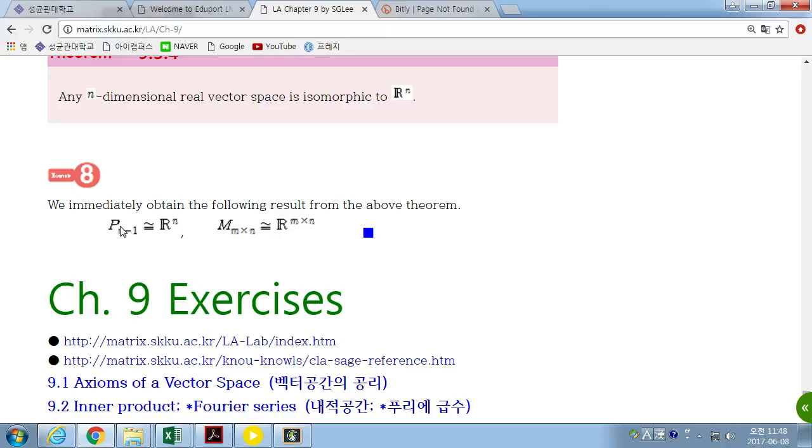So, over R. So, this is isomorphic to R^n. The set of m-by-n matrices over R is a m-by-n dimensional vector space over R, which is isomorphic to m-by-n dimensional space over R.